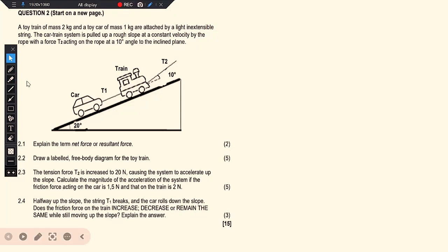Now we are on question 2, Newton's law. It says a toy train of mass 2 kg and a toy car of mass 1 kg are attached by a light inextensible string. The car-train system is pulled up a rough slope at a constant velocity by a rope with a force T2 acting on the rope at a degree angle to the inclined plane, as indicated on the diagram.